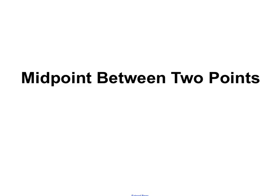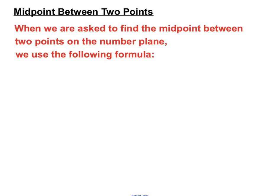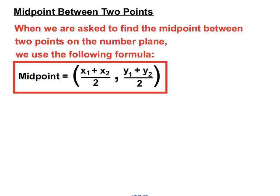This video helps us find the midpoint between two points on the number plane. When we're asked to find the midpoint between two points, we use the following formula: Midpoint = ((x1 + x2)/2, (y1 + y2)/2).